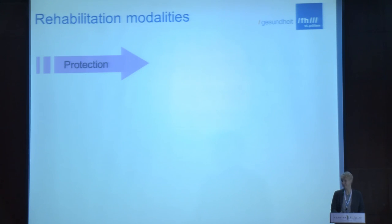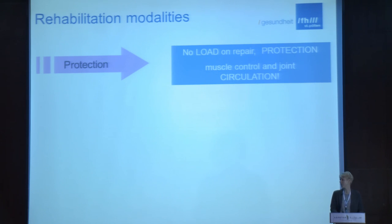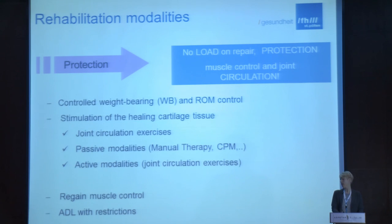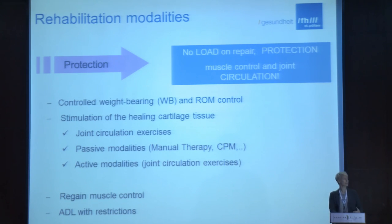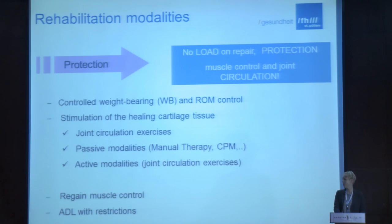What are the aims in the protection phase? Try to put no load on the repair zone, protect the repair zone, regain muscle control, and enhance joint circulation. How can you achieve these aims? Through controlled weight-bearing activities, range of motion control, stimulating the healing tissue by joint circulation exercises, passive modalities — in particular CPM — as well as starting to implement active modalities. These should be the main components in this first phase.